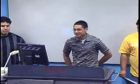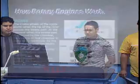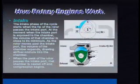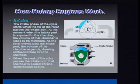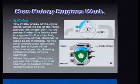The intake phase of the cycle starts when the tip of the rotor passes the intake port. At the moment when the intake port is exposed to the chamber, the volume of that chamber is close to a minimum. As the rotor moves past the intake port, the volume of the chamber expands, drawing the air-fuel mixture into the chamber. When a peak of the rotor passes the intake port, the chamber is sealed off and compression begins.